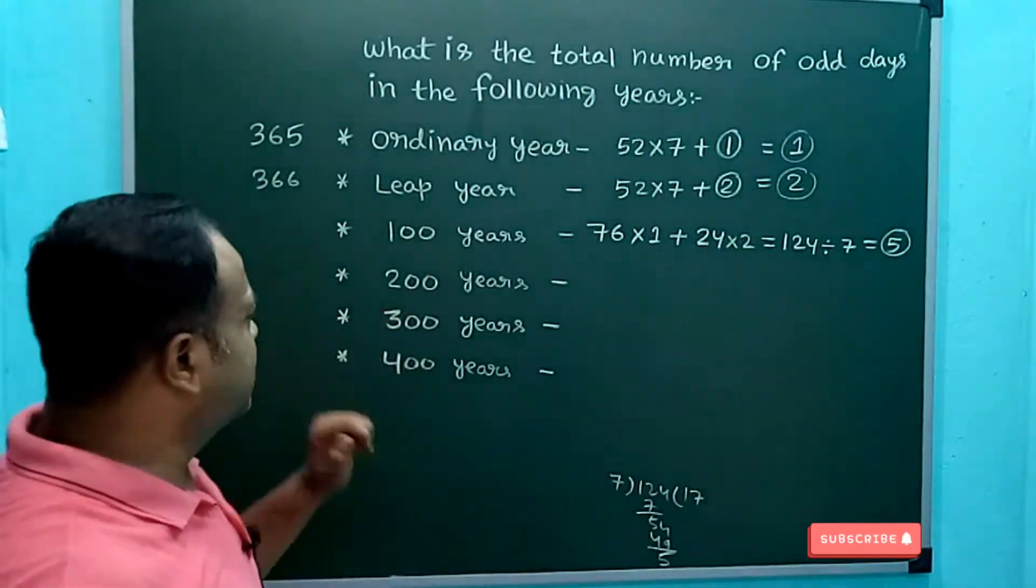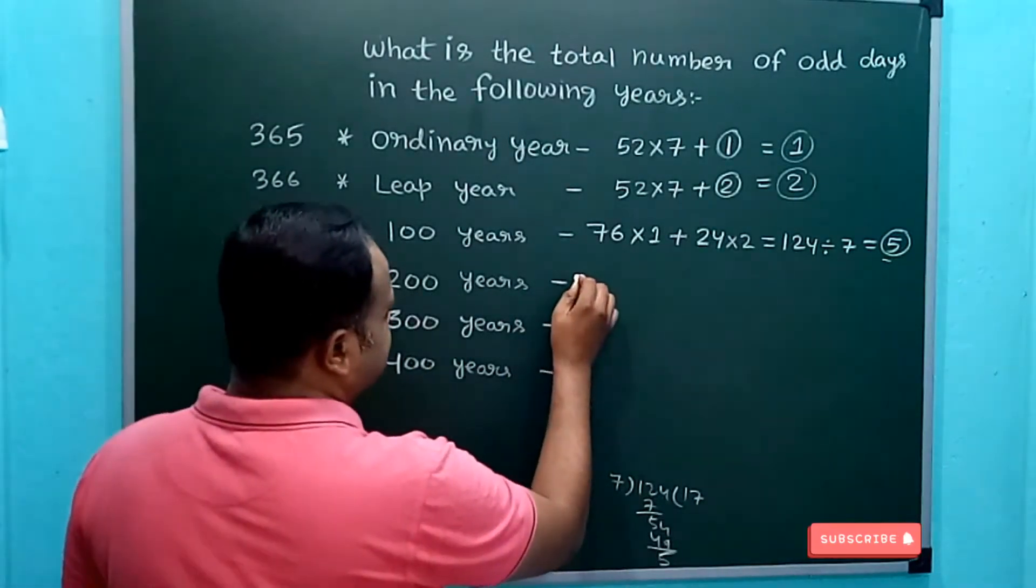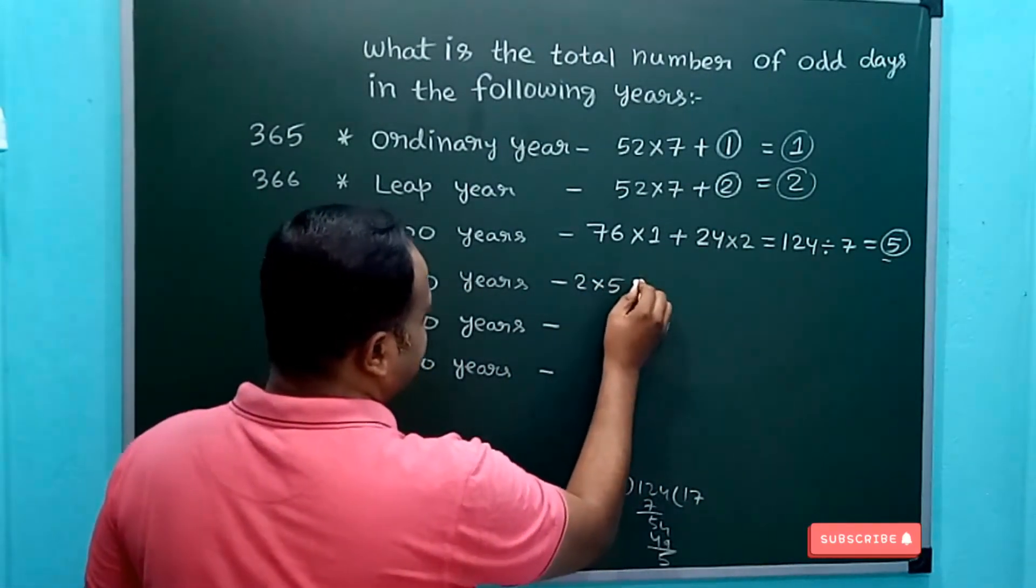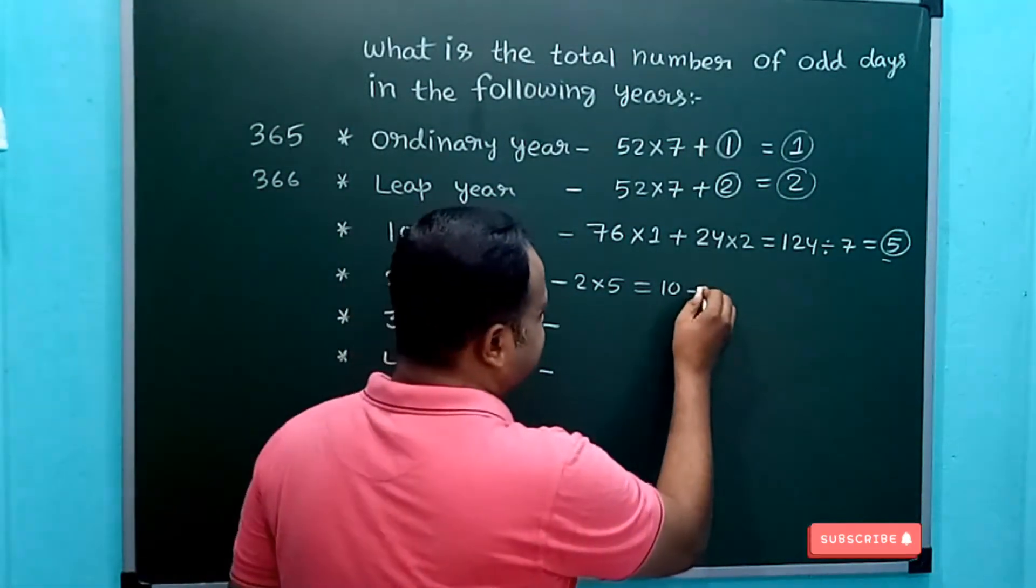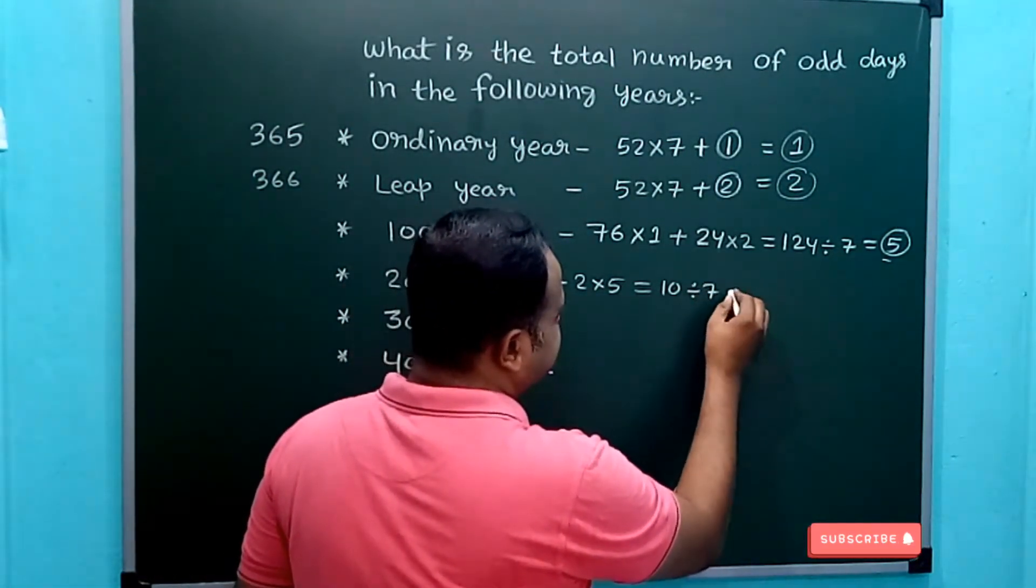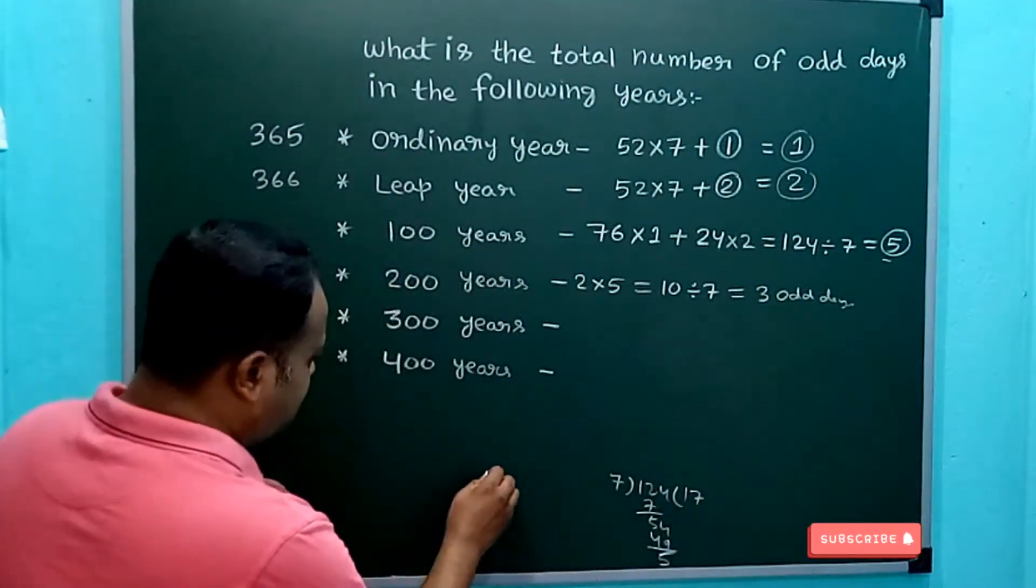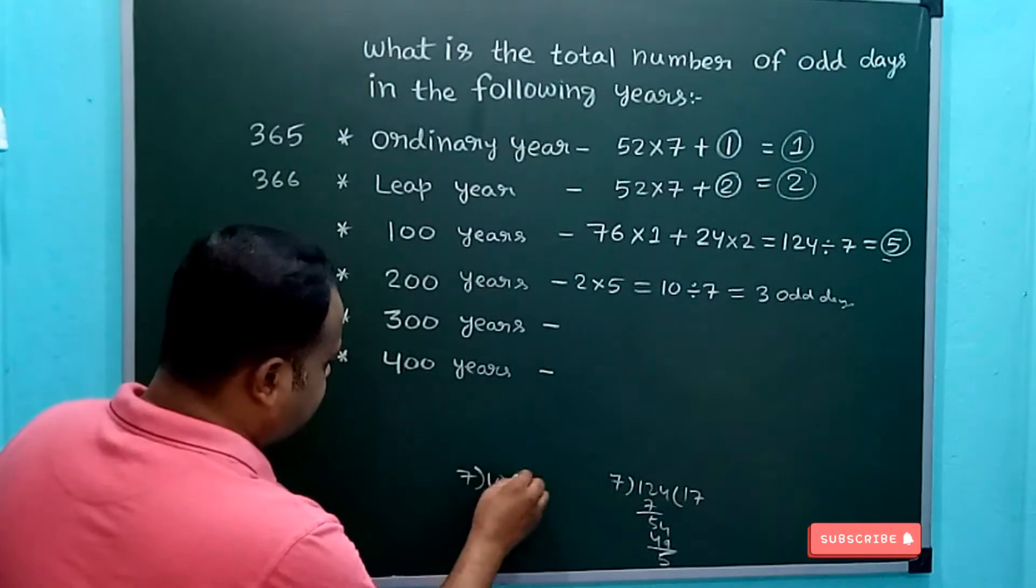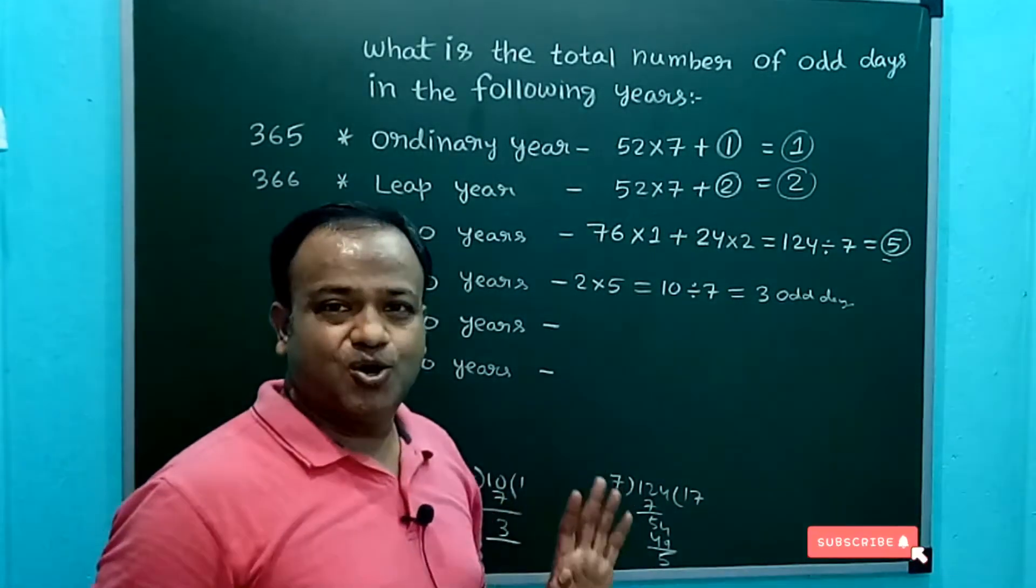Now the matter will become much easier in case of 200 years. Since 100 years have got 5 odd days, 200 years will have 2 × 5, that is 10. Now 10 divided by 7 gives us 3 odd days. Why 3? If you divide 10 by 7, we are left with 3 as remainder. So 3 are the odd days.